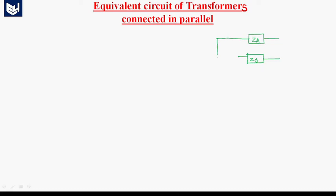On the secondary side, the EMF for the first transformer will be E2A — the secondary induced EMF of transformer A. And the secondary induced EMF of transformer B is E2B. To these transformer terminals, the load is connected, which has an impedance ZL.